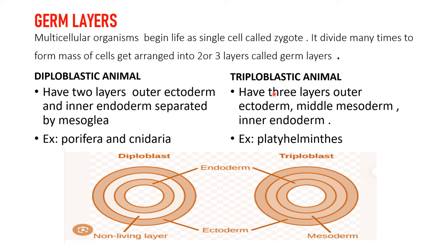Triploblastic — tri means three — means the organism has three layers: the outer ectoderm, the middle mesoderm, and the inner endoderm. All three layers are visible in the diagram. An example is Platyhelminthes.